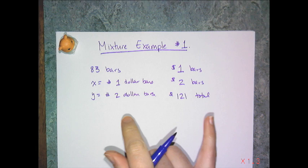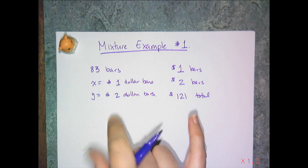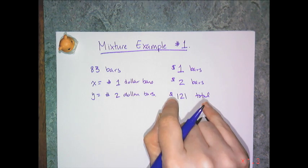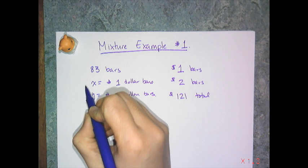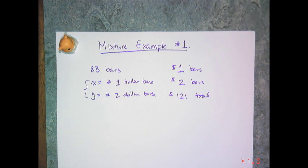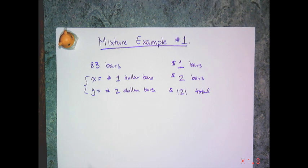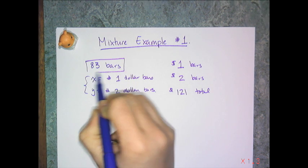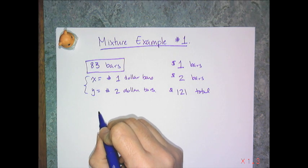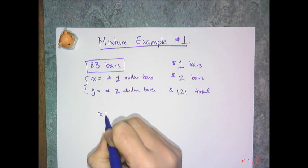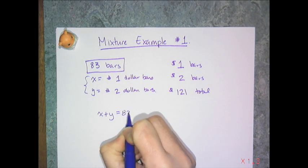And so I'm just going to take these two types of information, the number of bar information and the money information, and write my two equations, because the rule of thumb for algebra is if you have two variables, you need two equations to solve for both. So, one of my equations is going to use this 83 bars, and so in this case, since these are numbers of bars, my first equation is going to be x plus y equals 83.